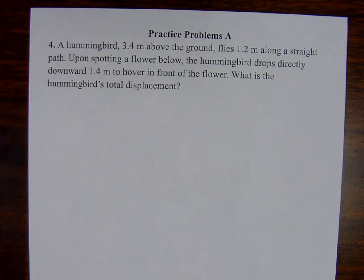Practice problem number four associated with sample problem A. A hummingbird 3.4 meters above ground flies 1.2 meters along a straight path. Upon spotting a flower below, the hummingbird drops directly downward 1.4 meters to hover in front of the flower. What is the hummingbird's total displacement?